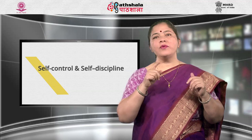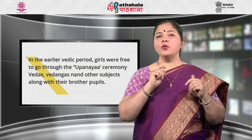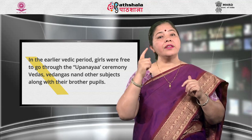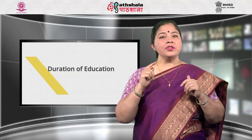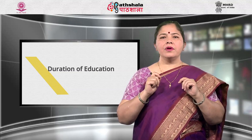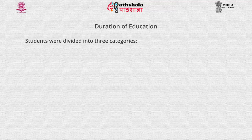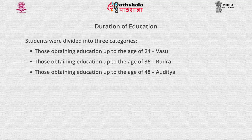There was widespread education of women in the Vedic period. In the earlier Vedic period, girls were free to go through the Upanayana ceremony and live a life of celibacy. They also studied the Vedas, Vedangas, and other subjects along with their brother pupils. Regarding duration of education, students in the teacher's house were required to obtain education up to the age of 24 years. Students were divided into three categories: Vasu — education up to age 24; Rudra — up to age 36; and Aditya — up to age 48.